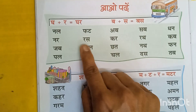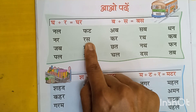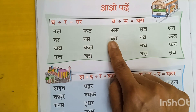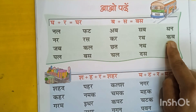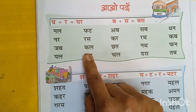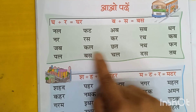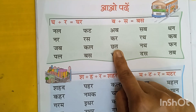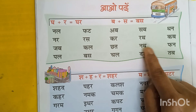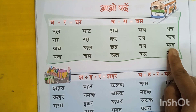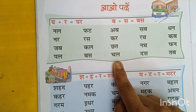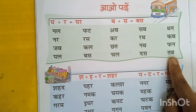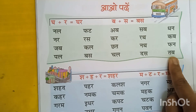Dha na dhan, ra sa ras, ka ra kar, ra tha rat, ka ba kab, ka la kal, cha ta chat, na tha nat, fa na han, ba sa bas, cha la chal, da sa das, ta wa tab.